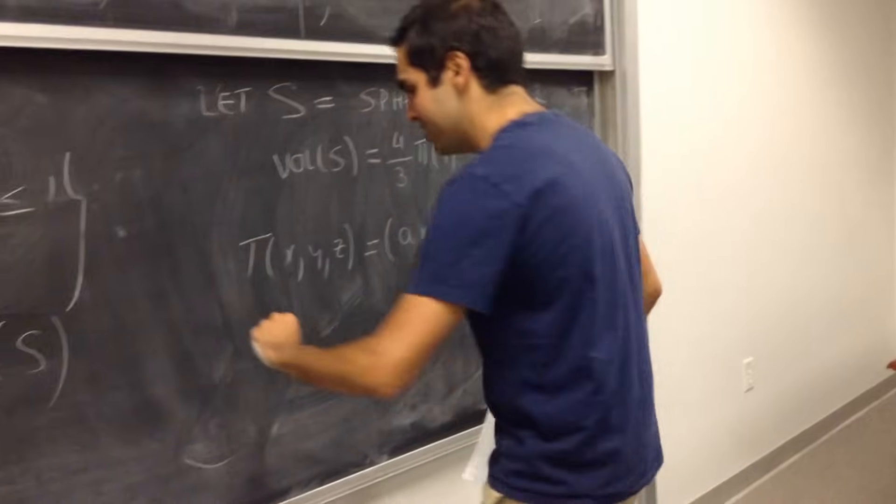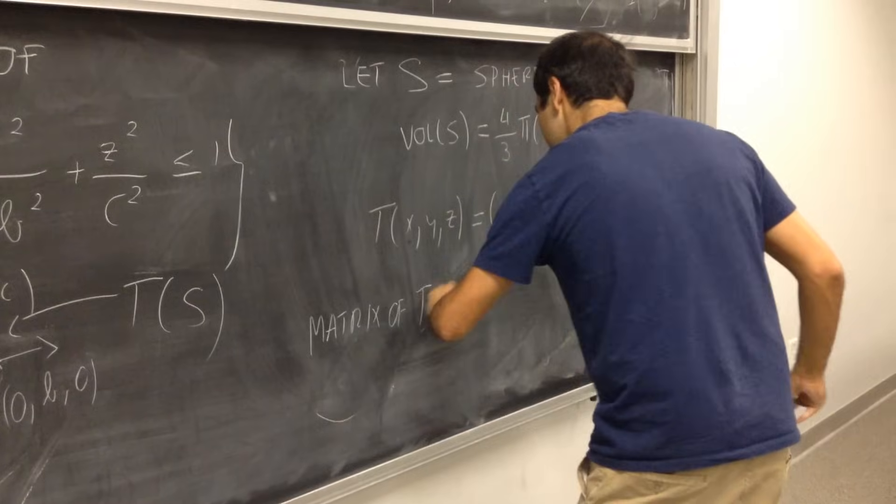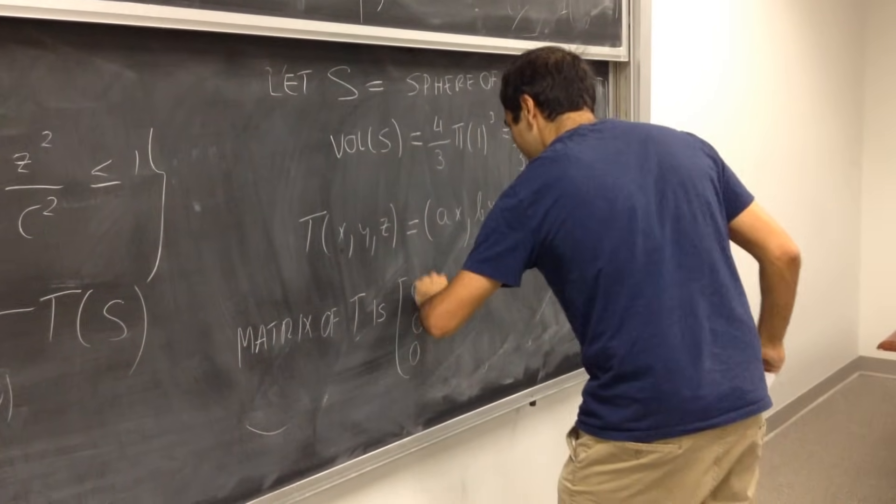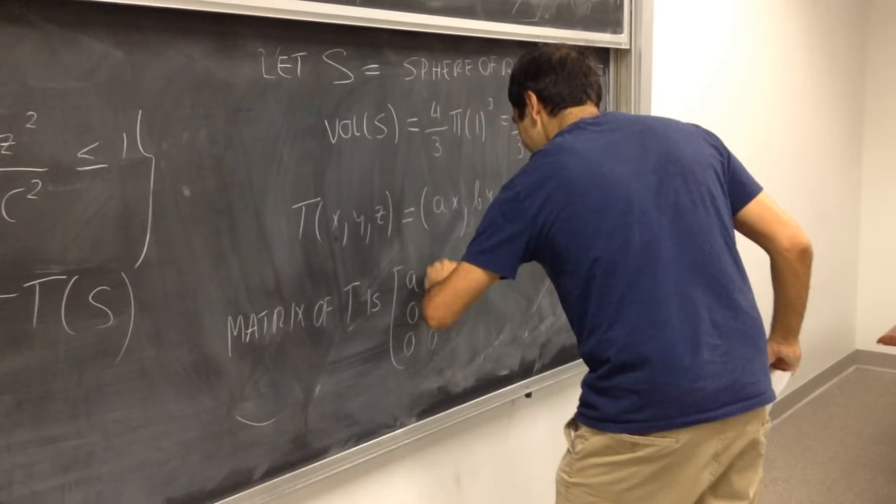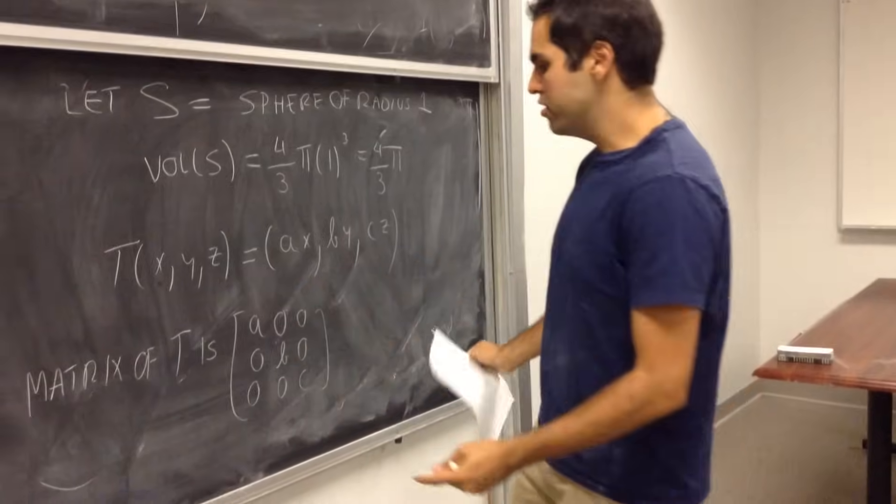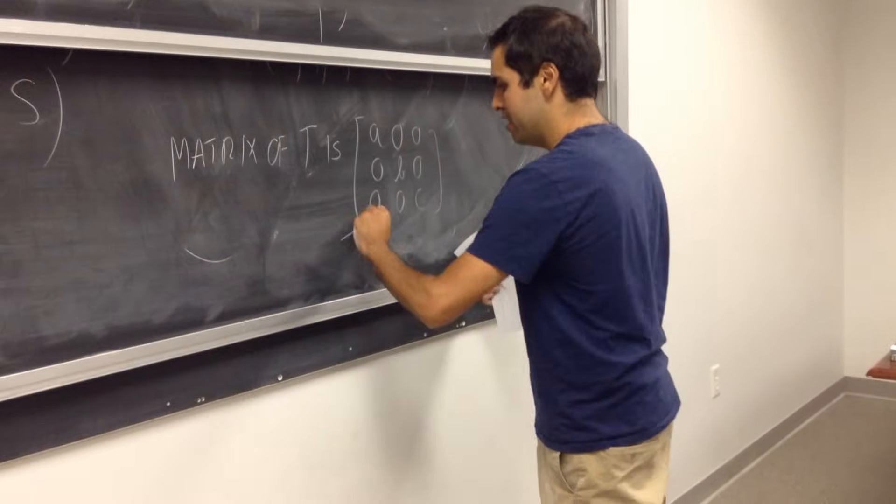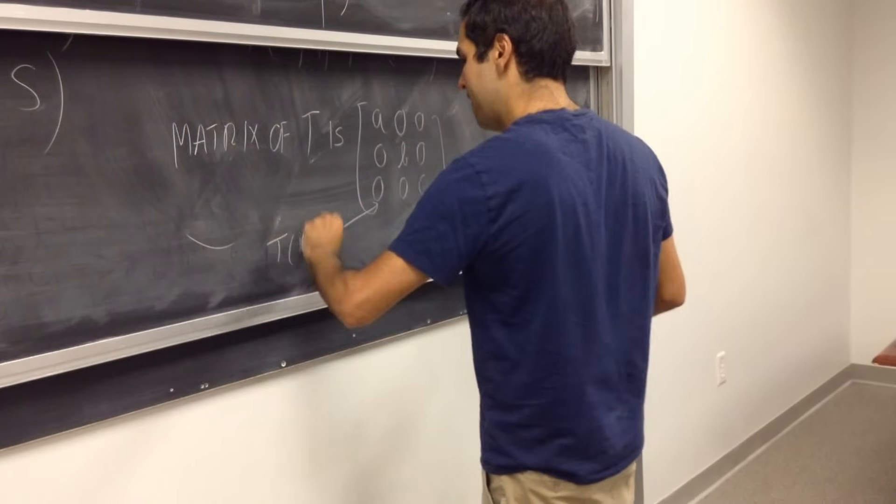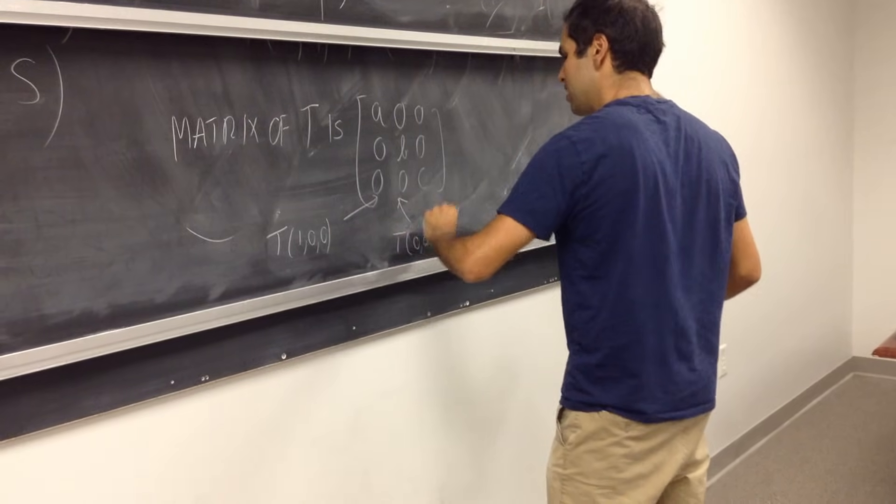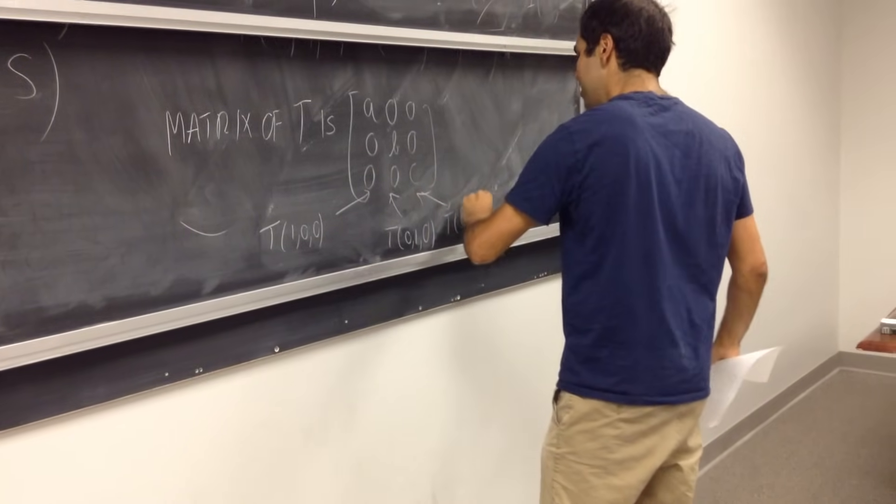The matrix of T is, if you calculate that, that's just a, 0, 0, 0, b, 0, 0, 0, c. So, all you do is, you see what happens to the point 1, 0, 0, so this gives you T of 1, 0, 0, T of 0, 1, 0, and T of 0, 0, 1.